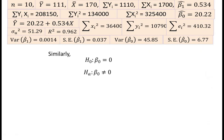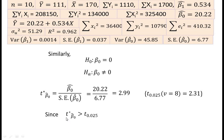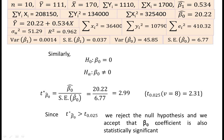Similarly, the null hypothesis is β₀ = 0 and alternatively β₀ ≠ 0. The t-value of β₀ cap equals β₀ cap divided by the standard error of β₀ cap, and is found to be 2.99. But the table value of t is 2.31. Since the t-value of β₀ cap is greater than the table value of t at 5% level of significance, we reject the null hypothesis and accept that β₀ coefficient is also statistically significant.